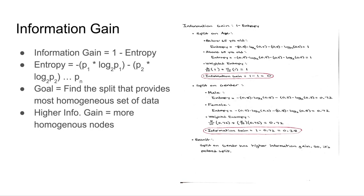The first way of splitting data is called information gain. Information gain has the formula of 1 minus entropy. Entropy has the formula of negative the probability of the first attribute times log base 2 of the probability of that same attribute, minus the probability of the second attribute times log base 2 of the probability of that second attribute, all the way until you finish the entire set of data for that specific split. Our goal is to find the split that provides the most homogenous set of data — this holds true for all decision tree splits. Specifically for information gain, a higher information gain means more homogenous nodes, so our goal is to find the split with the highest information gain.